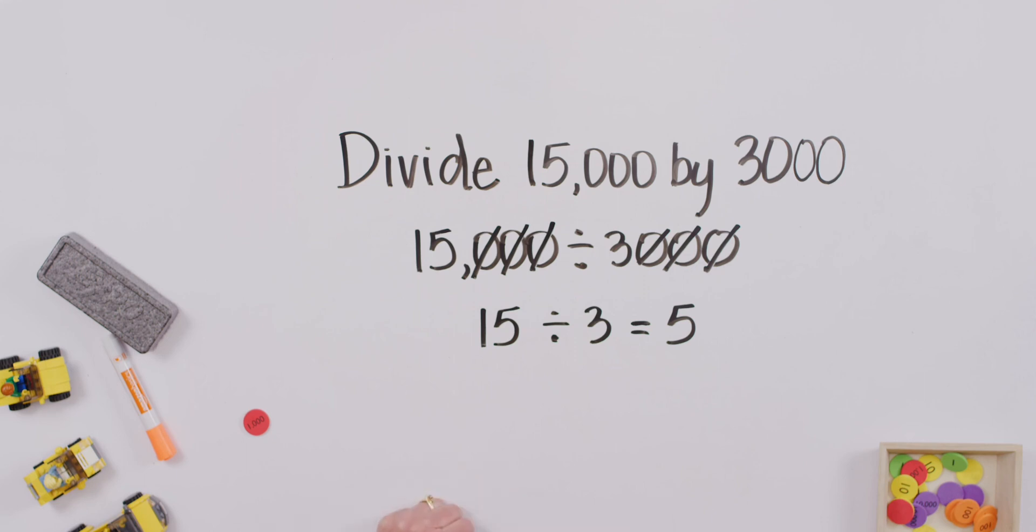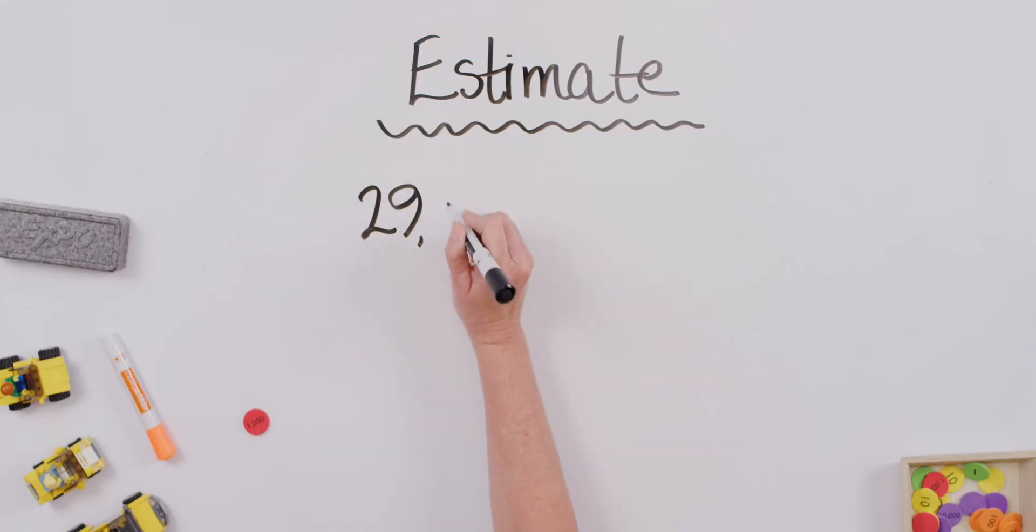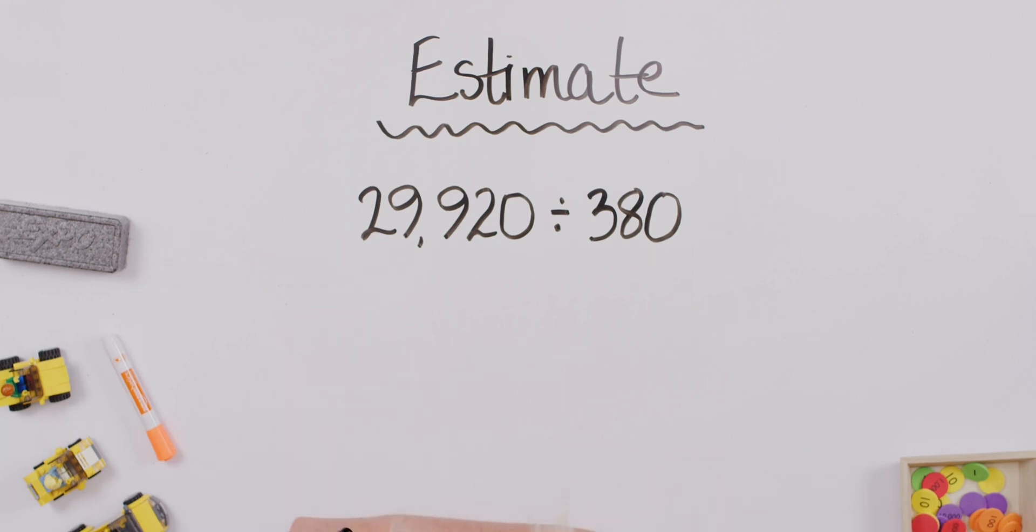Excellent work, you guys. We are going to now finish with an estimation problem. We are going to do some estimation. What if I gave you this one right here? 29,920. And we're going to divide that by 380. There are a couple strategies we're going to learn to make this feel so much easier. The very first thing you're going to do when you're trying to estimate is we are first going to round our divisor first.